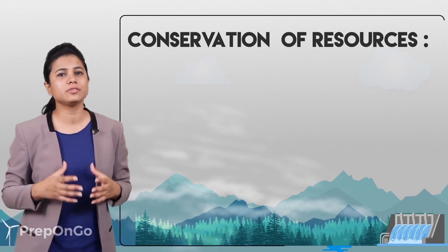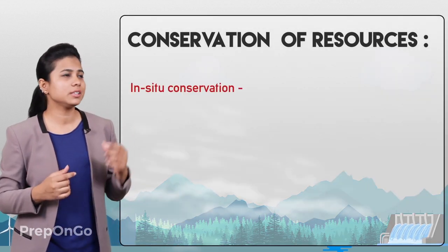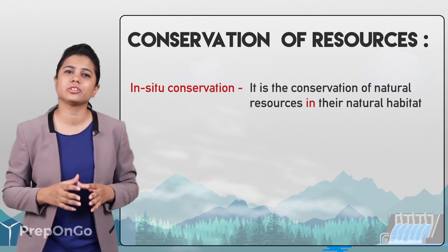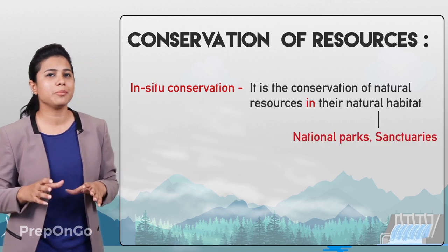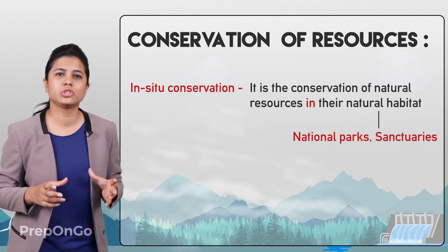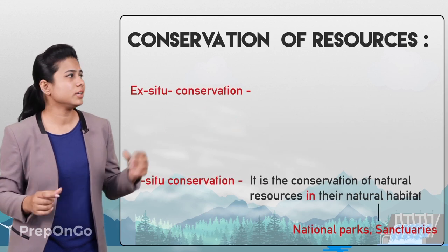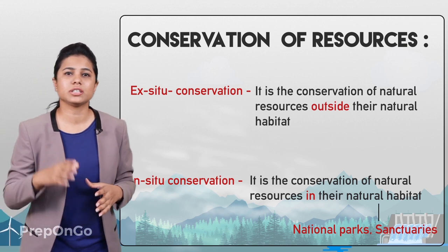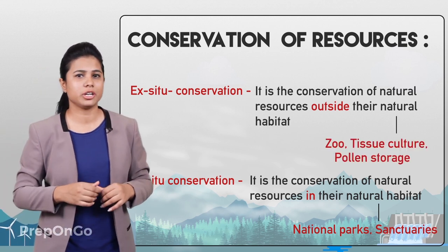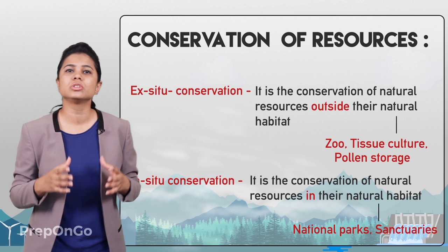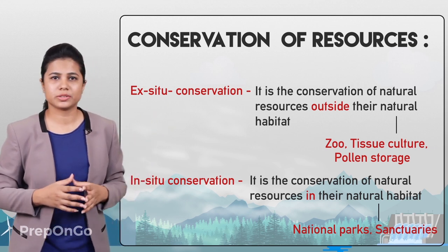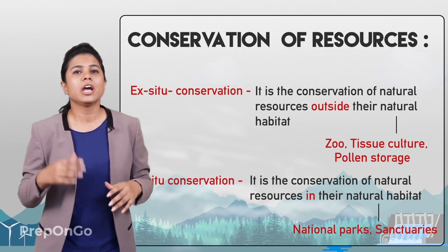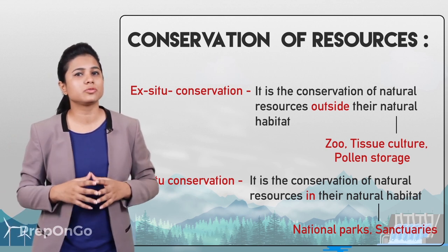We can conserve these resources in two ways. The first is in-situ conservation, which involves conserving natural resources within their natural habitat — for example, national parks and sanctuaries. The second is ex-situ conservation, which involves conserving natural resources outside their natural habitats — for example, zoos, tissue culture, and pollen storage. We'll study these natural resources in detail in our next lecture and also see various methods for their conservation.